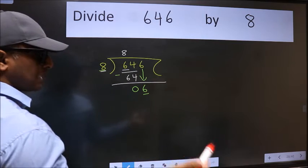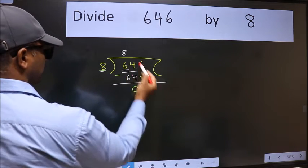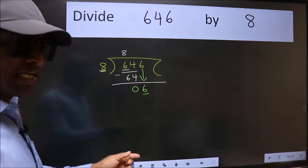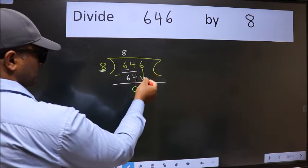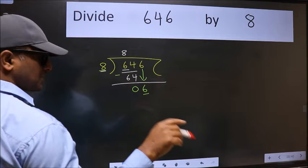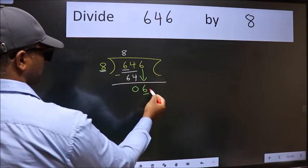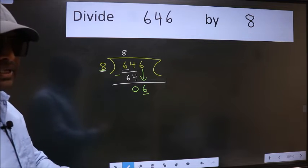So what many do is they directly put dot take 0 which is wrong. Why is it wrong? Because just now you brought this number down. And in the same step, you want to put dot take 0 which is wrong. I repeat.